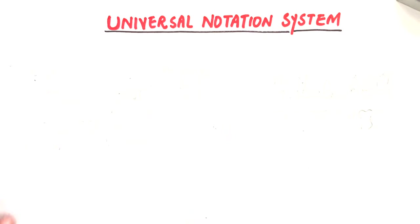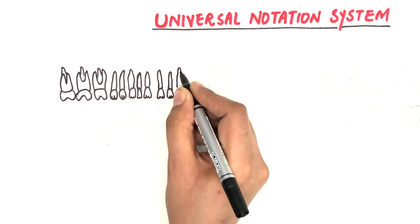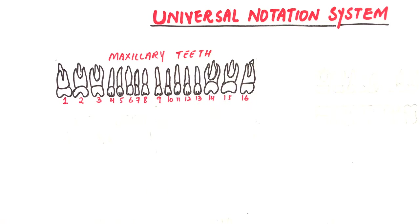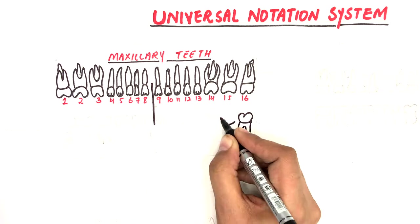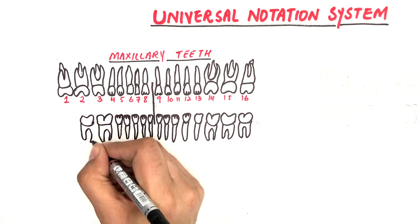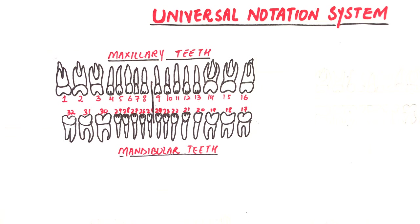In the universal numbering system, which is the most commonly used system, the maxillary teeth are numbered from 1 to 16, starting from the maxillary right third molar and ending at the maxillary left third molar. The mandibular teeth are numbered from 17 to 32, beginning from the left mandibular third molar and ending at the right mandibular third molar.